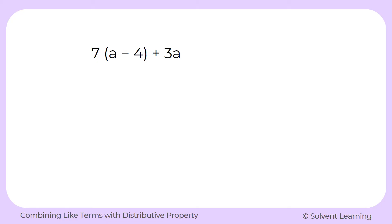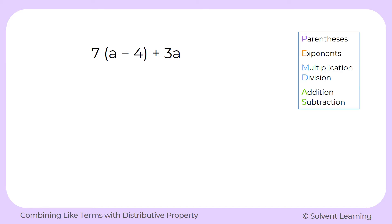So where do we begin? When we're simplifying expressions and need to know where to start, we think of the order of operations, which tells us to first simplify what's inside parentheses. Here we have a minus 4, but that can't be simplified any more than it already is. a and 4 are not like terms, so we can't combine them. So let's move on to the next step.